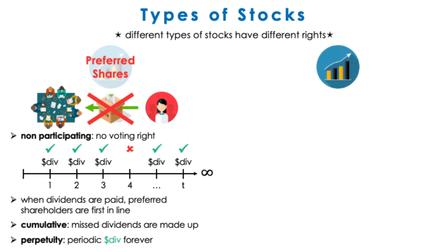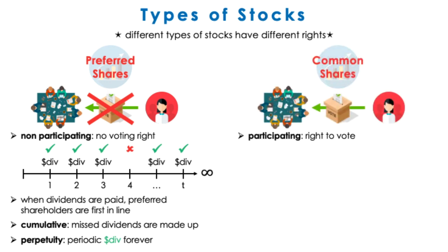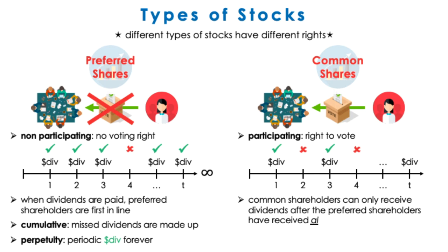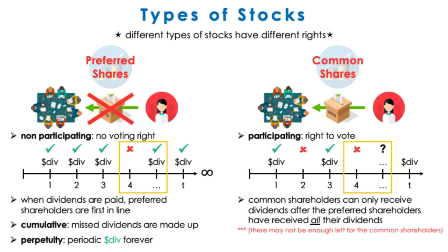The other type of stocks is common shares. Common shares have voting rights, but are only paid dividends after the preferred shareholders have already received their dividends. Thus, with unpredictable cash flows, holding equity, such as investing in stocks, is generally riskier than holding debt, such as fixed instruments like bonds. Additionally, the unpredictable cash flows make the price of a common share more difficult to value, which we will leave for the next video.